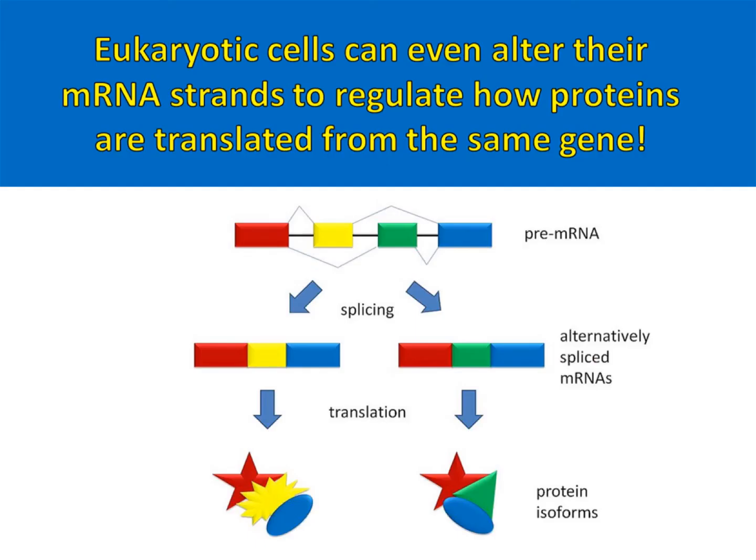Eukaryotic cells can even alter their messenger RNA strands to regulate how proteins are translated from the same gene. This gives eukaryotic cells even more control over how their genes are expressed.